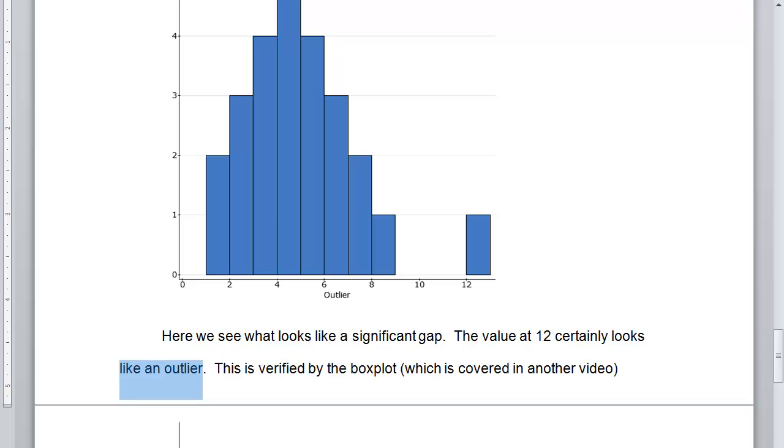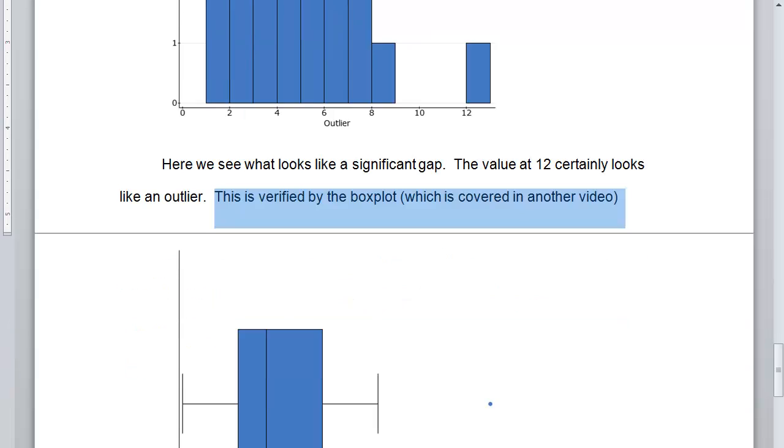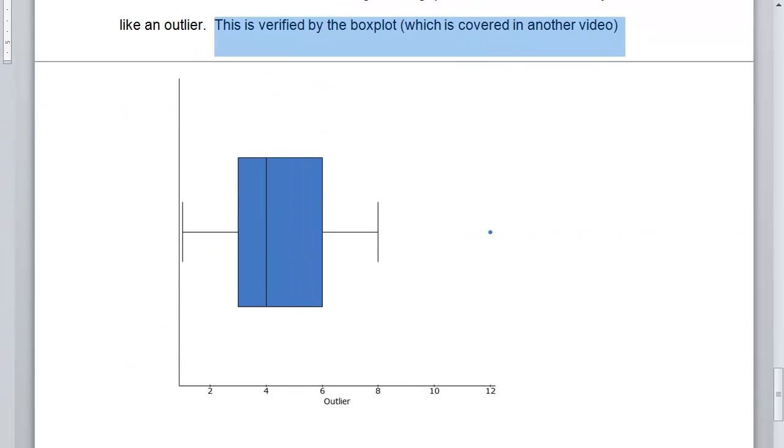And so this is verified by the box plot, which is basically covered in another video. But we can see that the 12 is an outlier because it's a dot out away from the rest of the box plot. And so that's how we would verify it.